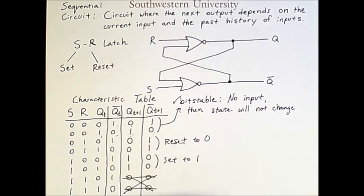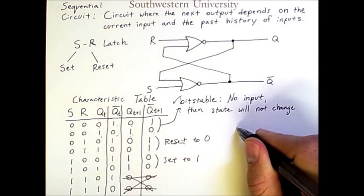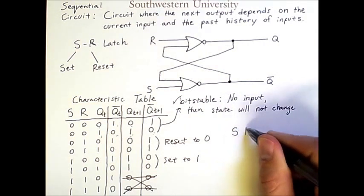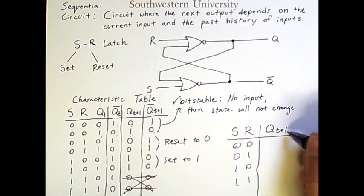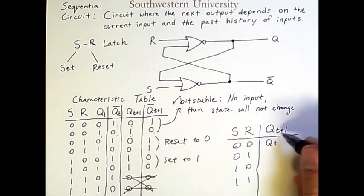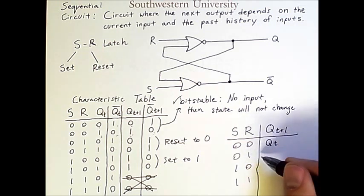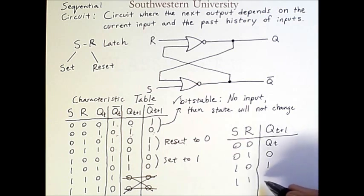But before we move on, let's simplify this characteristic table into something a bit more readable. Let's just look at the behavior in terms of S and R. Then the value of Q at time T plus one will, in this case, simply be the same as it was before. So Q at time T plus one will be the same as Q at time T. In this case, I am resetting the bit. Therefore, I'll have a value of zero. And in this case, I'm setting the bit and we'll have a value of one. In this case, simply not allowed.